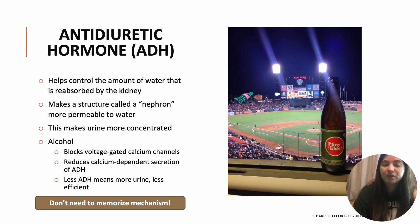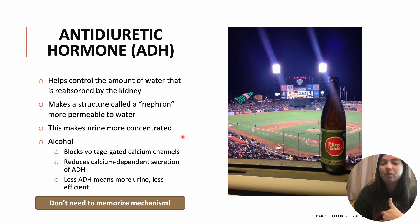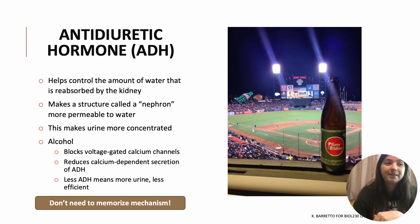ADH also makes your urine more concentrated. When you drink a lot of alcohol, you also need to go to the bathroom a lot. That's because ingesting alcohol makes the ADH system work less effectively. So less ADH is being produced, which means the nephrons are less permeable to water, which means that more water is getting sent down your ureter and into your bladder, causing you to pee more.